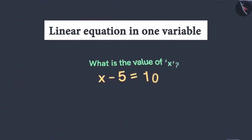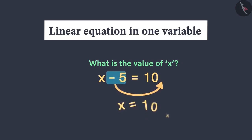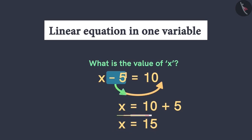Now, let's solve one more simple problem. We will transpose the number minus 5 to the right-hand side. But be careful — when we transpose minus 5 to the other side, it will become plus 5. After this step, we will get the value of x as 15. We got our solution in just one step by transposing minus 5 to the other side. This efficient way will help us in further sessions to solve the equations swiftly.